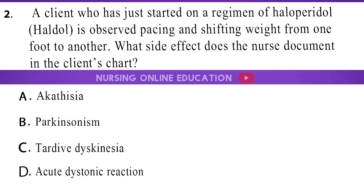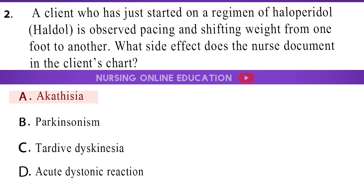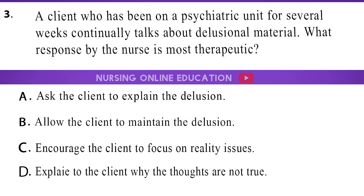Question 2. A client who has just started on a regimen of haloperidol (Haldol) is observed pacing and shifting weight from one foot to another. What side effect does the nurse document in the client's chart? A. Akathesia. B. Parkinsonism. C. Tardive dyskinesia. D. Acute dystonic reaction. The answer is option A: Akathesia.